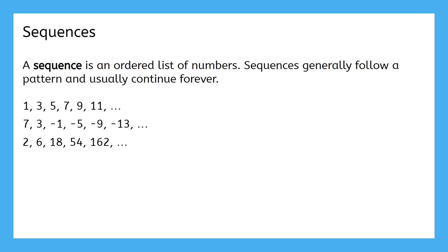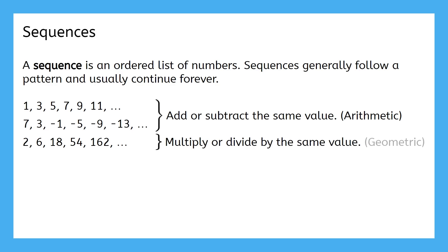The first two sequences have a pattern of adding or subtracting the same value repeatedly. While we'll discuss this in a later lesson, these are called arithmetic sequences. The last one fits a pattern of multiplying or dividing the same value repeatedly. This is called a geometric sequence. For now, though, all you need to know is that sequences usually have patterns.